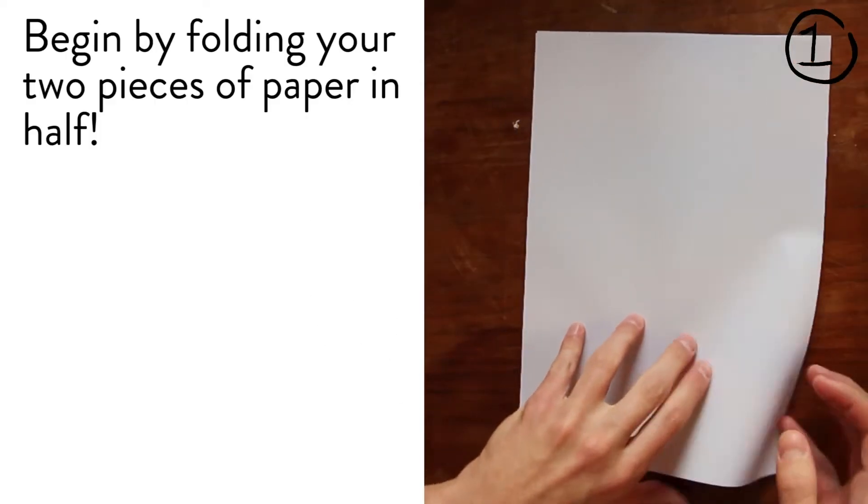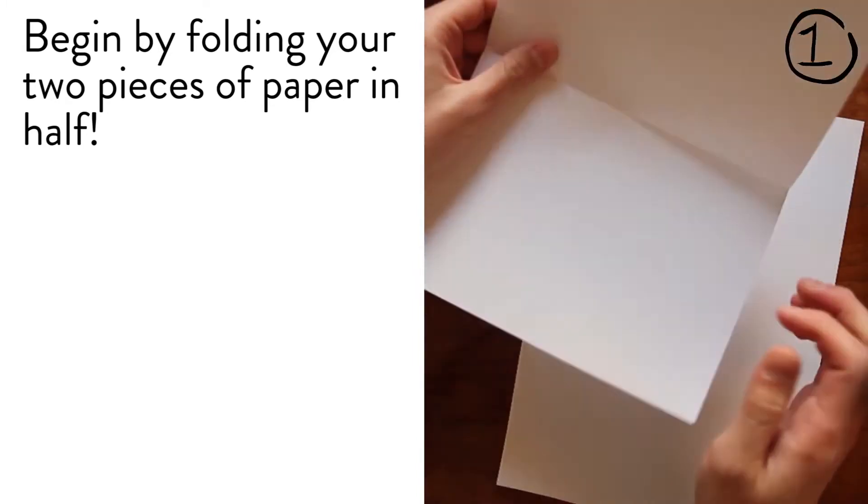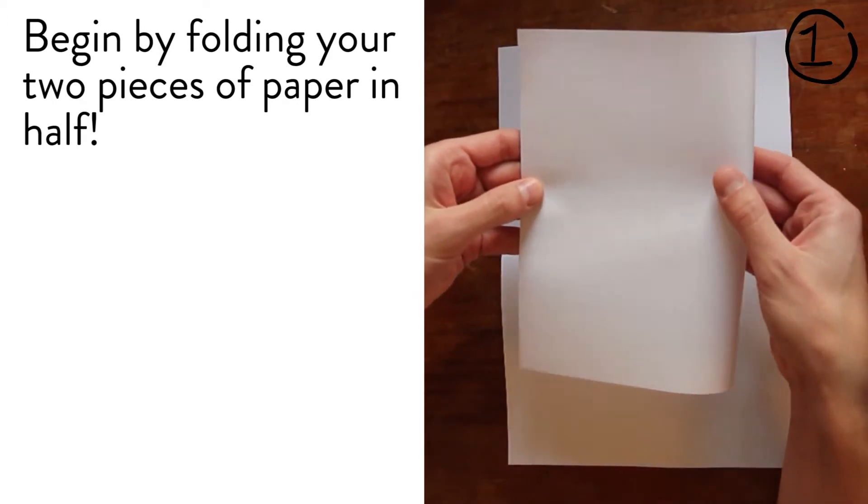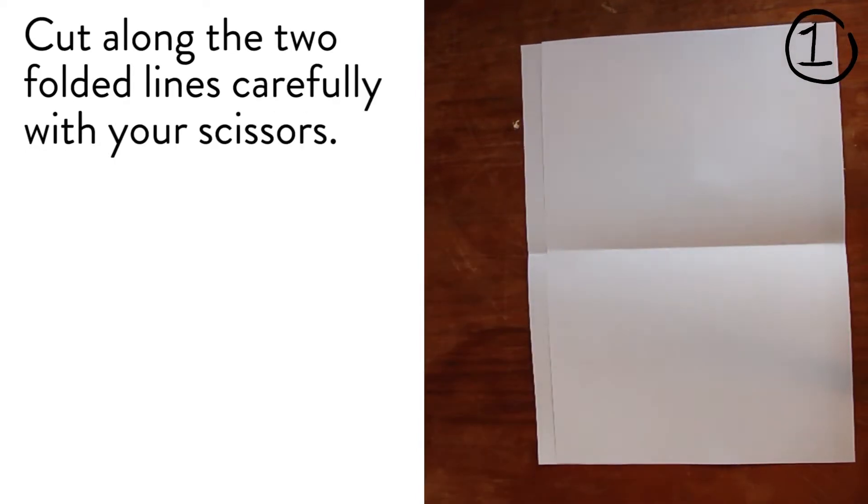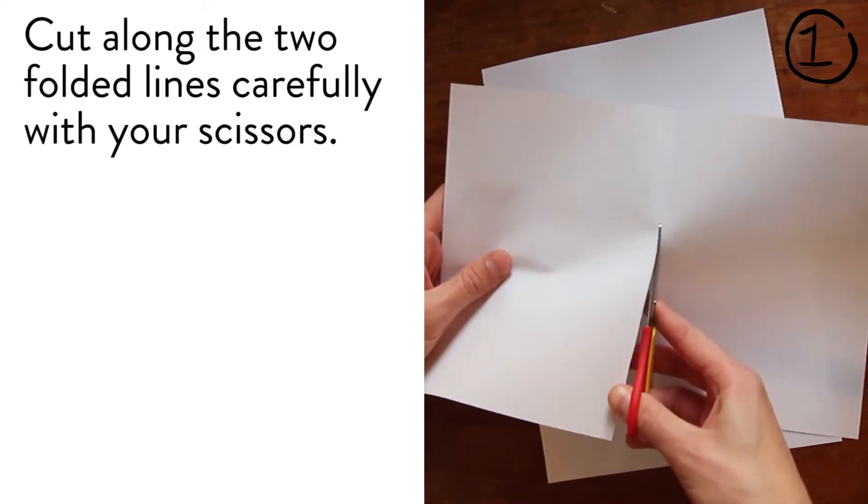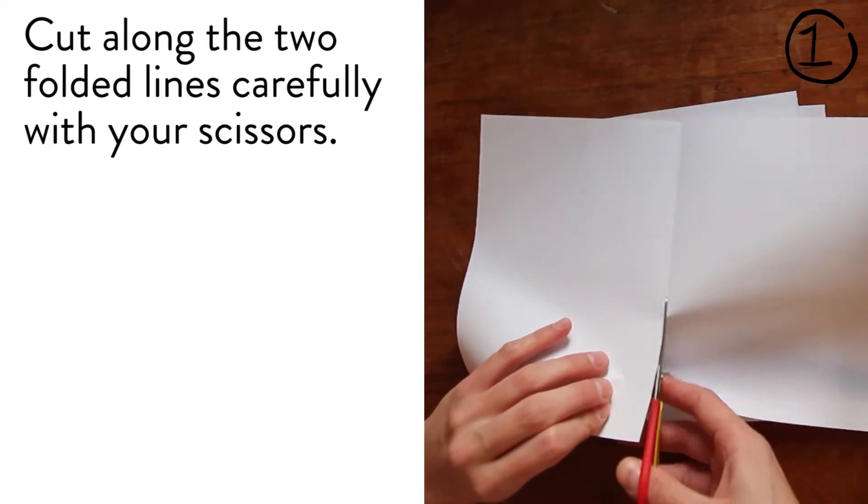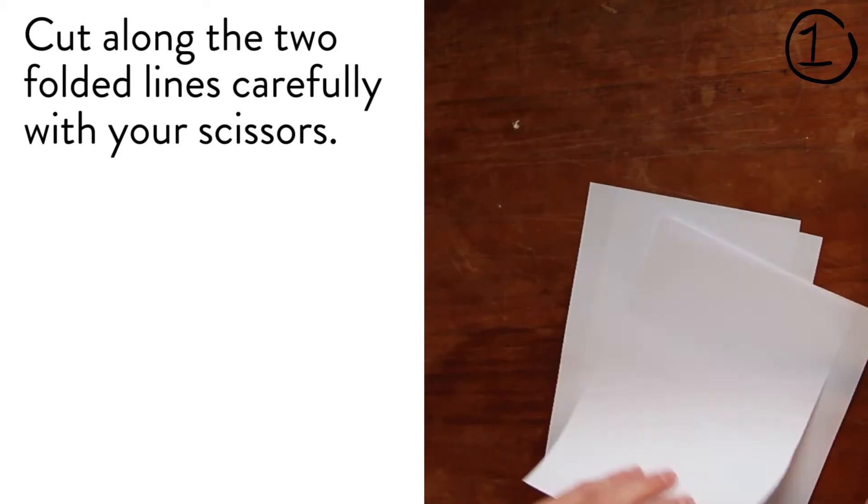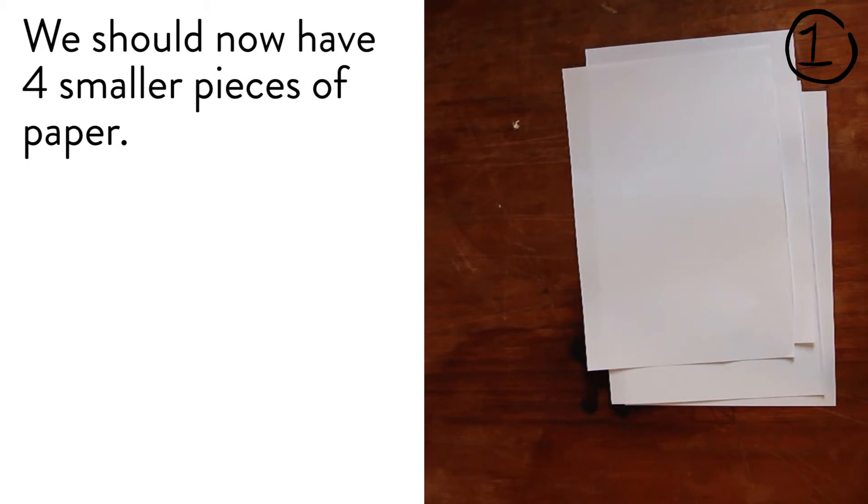And we will begin by breaking our two pieces of paper into four. Begin by folding your two pieces of paper in half. Cut along the two folded lines carefully with your scissors. We should now have four smaller pieces of paper.